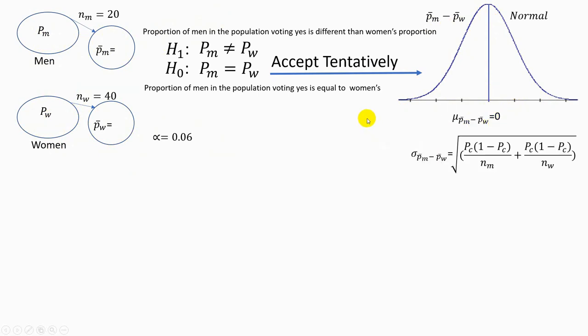The standard deviation of the difference between two proportions also matters, and it follows a formula based on the combined proportion observed in our sample.